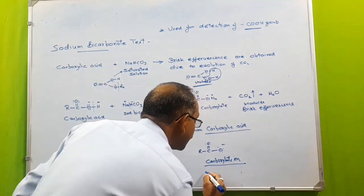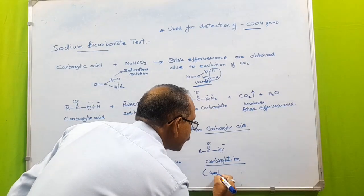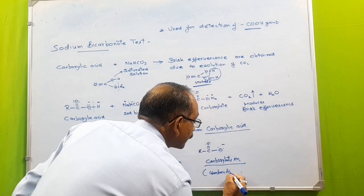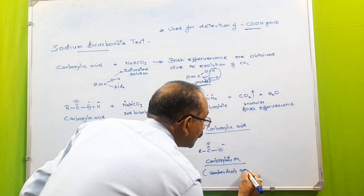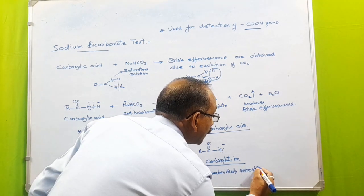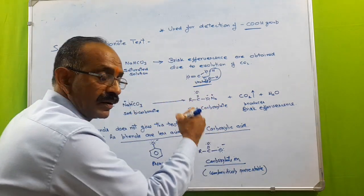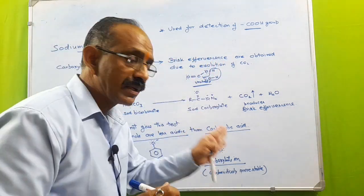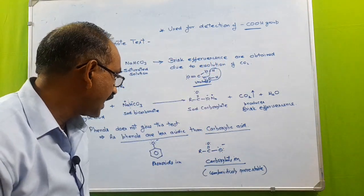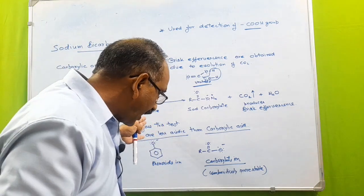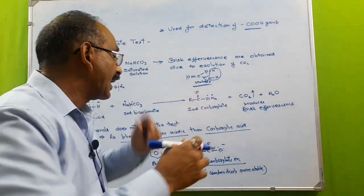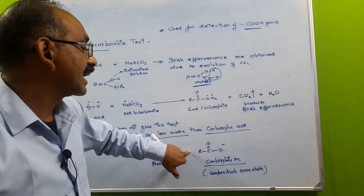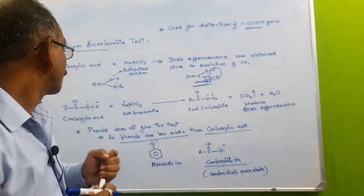And remember, this carboxylate ion is comparatively more stable. Because the carboxylic acid produces more stable anion, it will ionize more readily. That's why the carboxylic acid is more acidic.